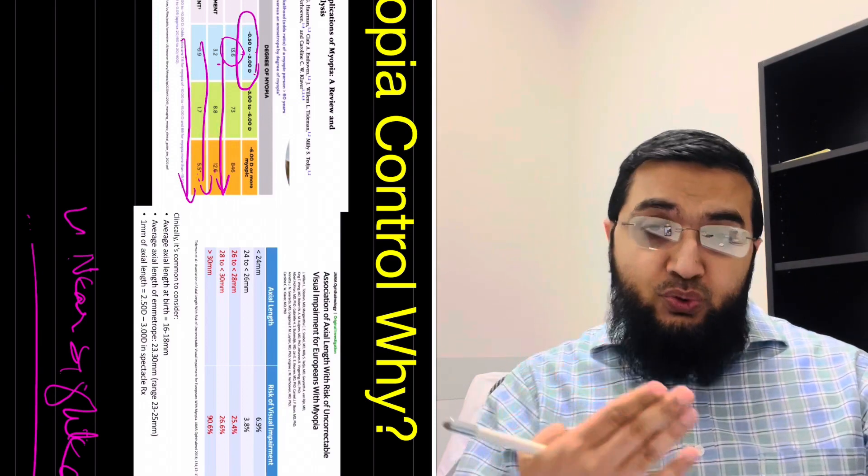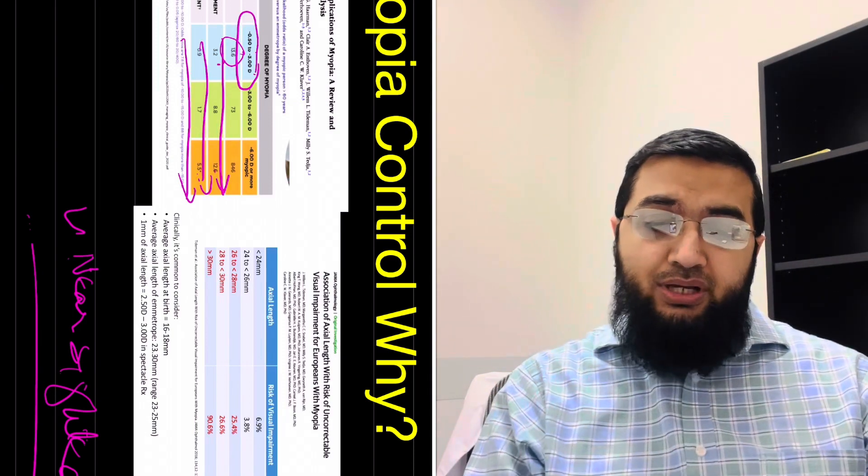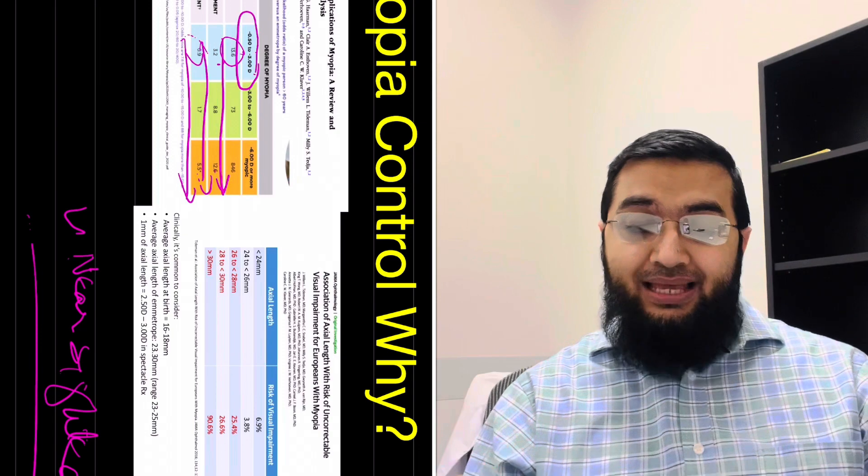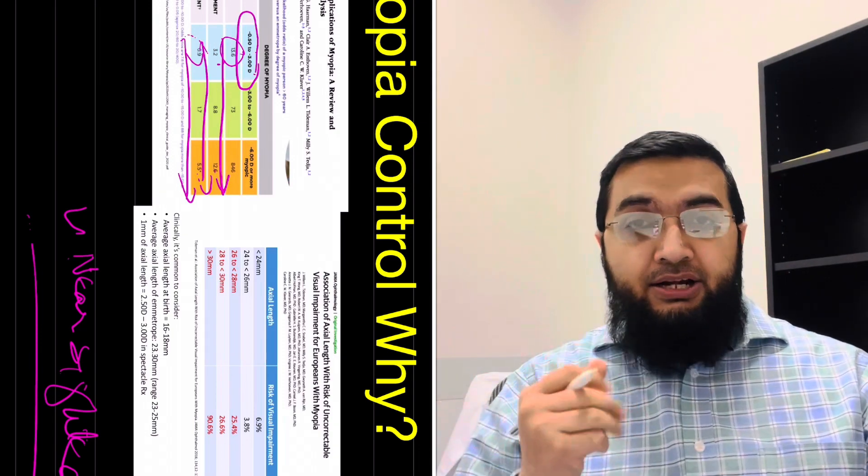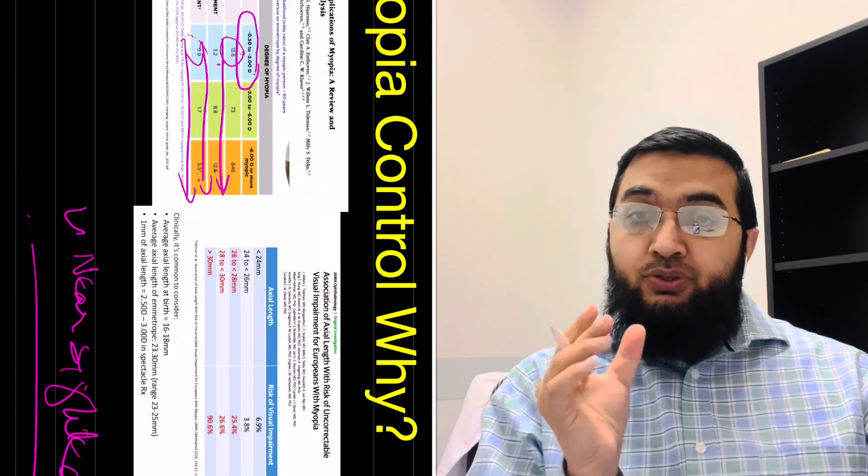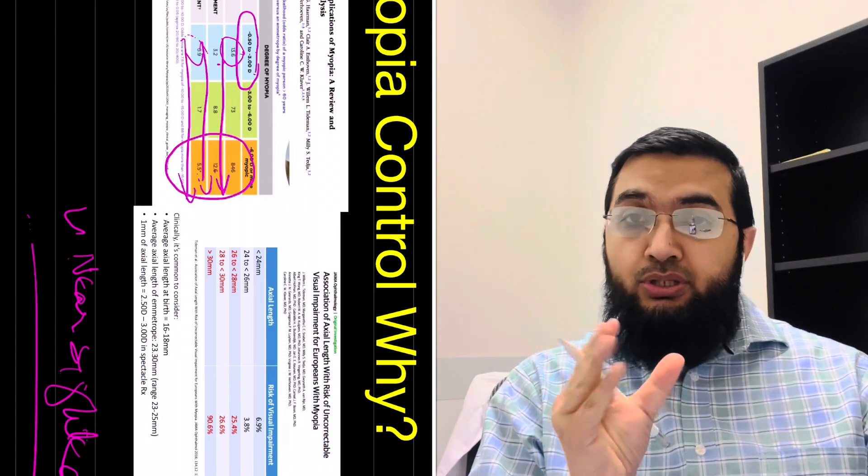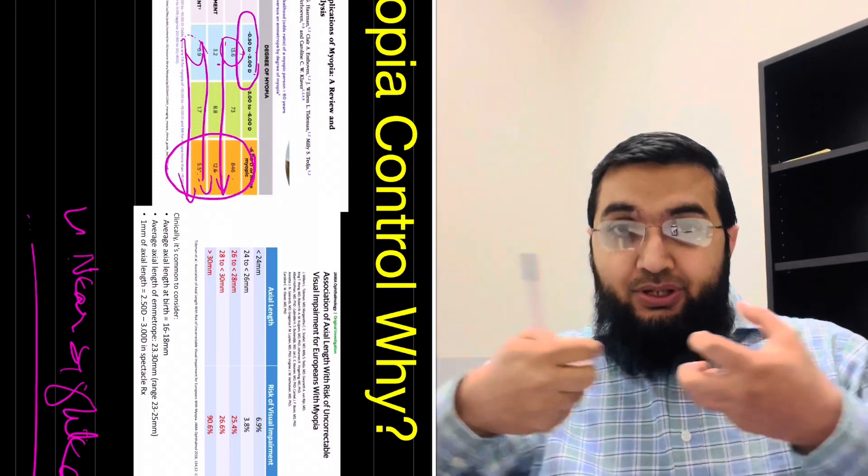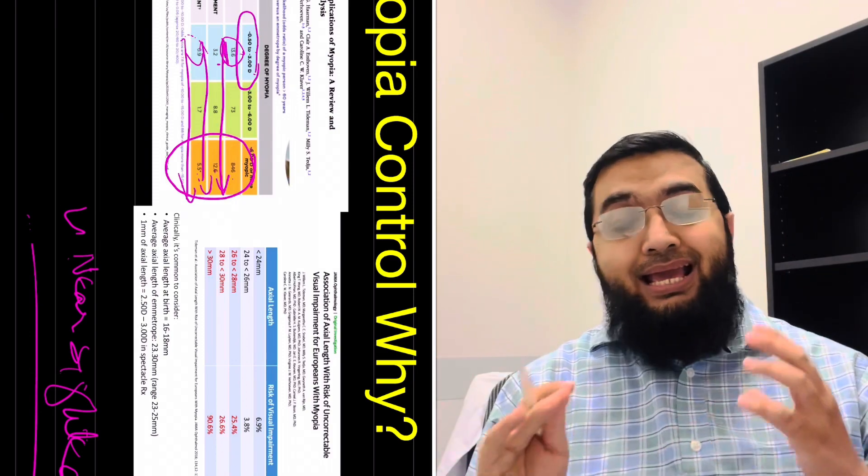It reduces the hyperopic defocus - that's what it does and that's how it gives you control in the change of the axial length. You want to stop the growth, stop the increase or expansion of the eyeball, and that's what limits the myopia in this case.